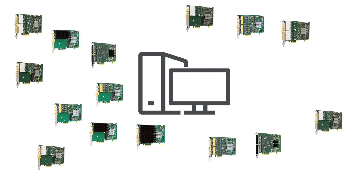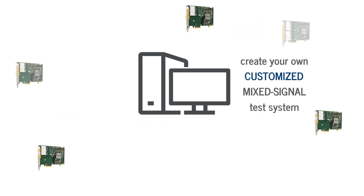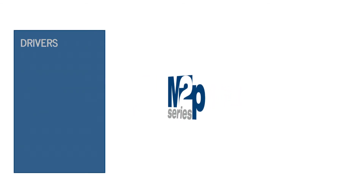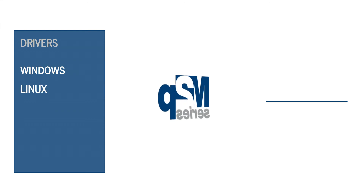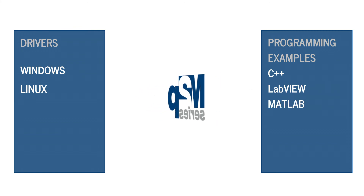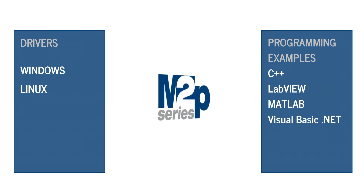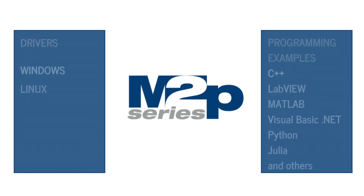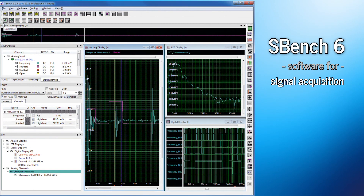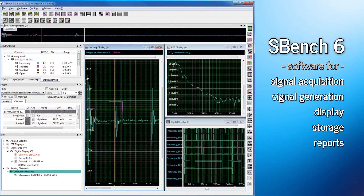StarHub and the M2P card family is the easy way to create your own customized mixed signal test system. Fully programmable, all the M2P cards come with drivers for Windows and Linux as well as programming examples for C++, LabVIEW, MATLAB, VisualBasic.NET, Python, Julia, and other popular programming languages. Spectrum's own control software, SBench 6, is also available for signal acquisition, generation, display, storage, reports, and signal processing.